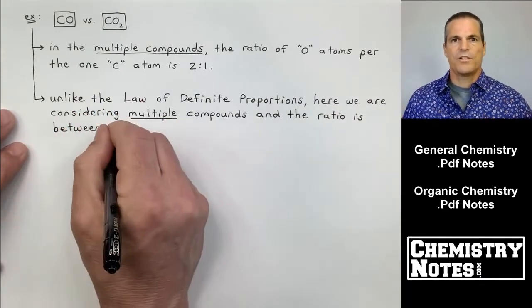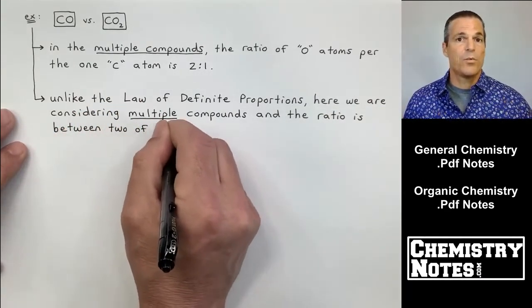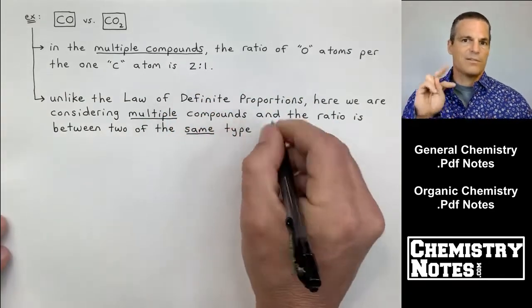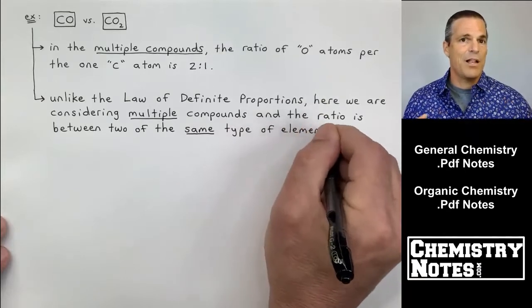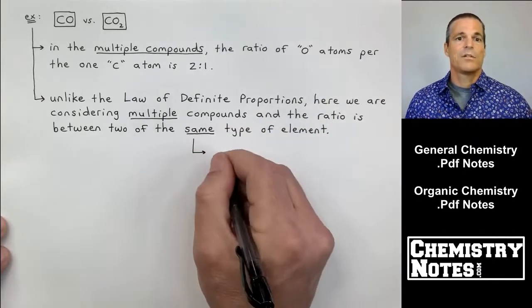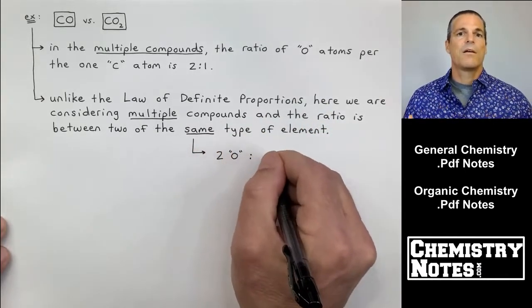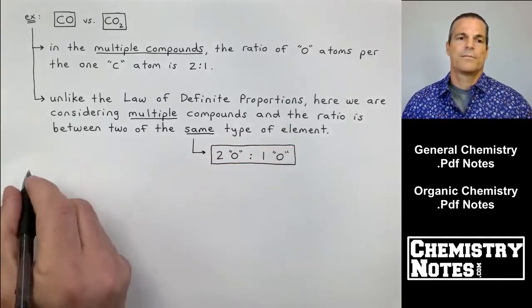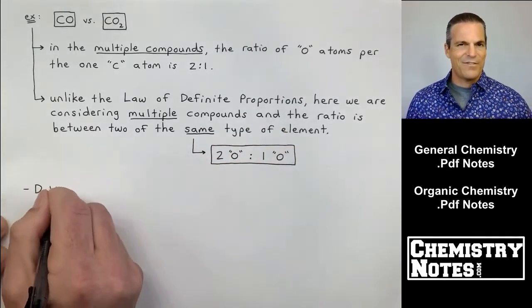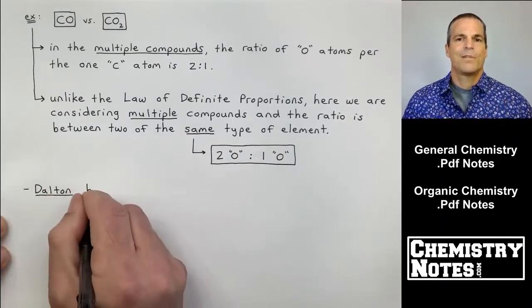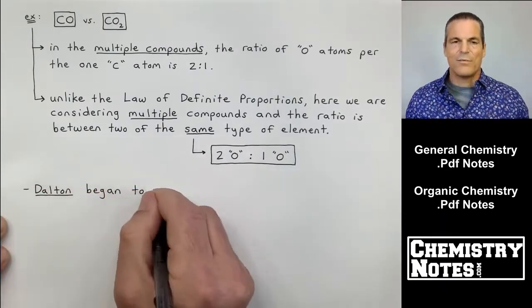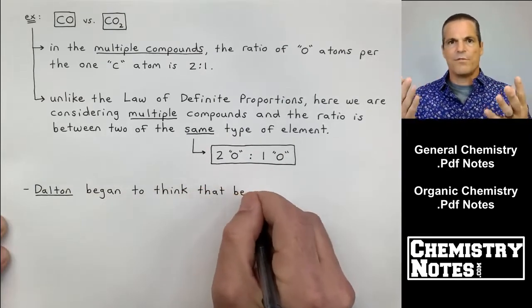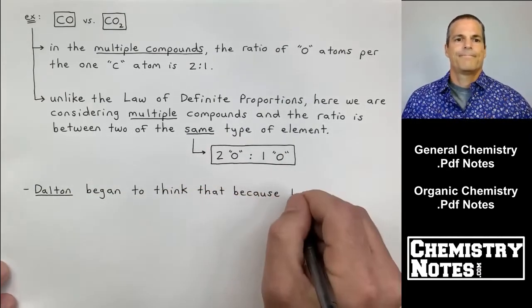So unlike the law of definite proportions, here we are considering multiple compounds and the ratio is between the same elements, just in different compounds. Law of definite proportions. We had our example with two H's to one oxygen, different elements, one definite compound, different elements here. It's the same element that you're making comparisons to. So it's two oxygens for every one oxygen in the multiple compounds. So hopefully that clarifies it up a little bit. You can see how there's kind of, in your head, they can kind of flow over unless you have the two in front of you for comparison.